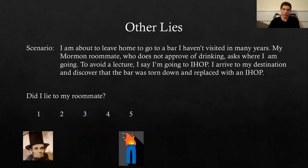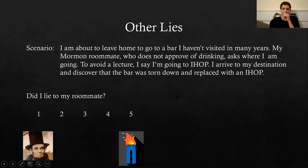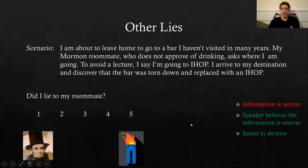In the next scenario, I'm about to leave home to go to a bar I haven't visited in many years. My Mormon roommate, who doesn't approve of drinking, asks where I'm going. To avoid a lecture, I say I'm going to IHOP. When I arrive at my destination, I discover the bar was torn down and replaced with an IHOP. So the information I gave my roommate is untrue, but I believed it was untrue — I didn't know I was actually going to an IHOP. I still intended to deceive them, but accidentally told the truth.